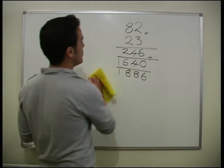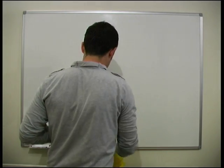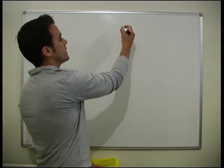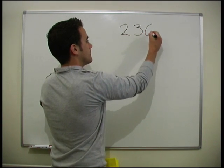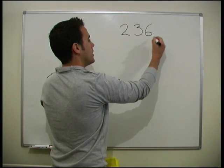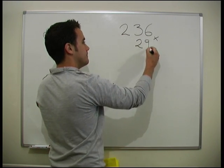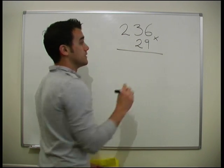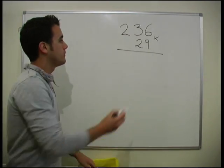We'll do one more example with an even bigger number on the top. So now we'll do 236 times by 29. Okay. So really big number now. So we're going to do the 9 times everything, and then the 2 times everything.